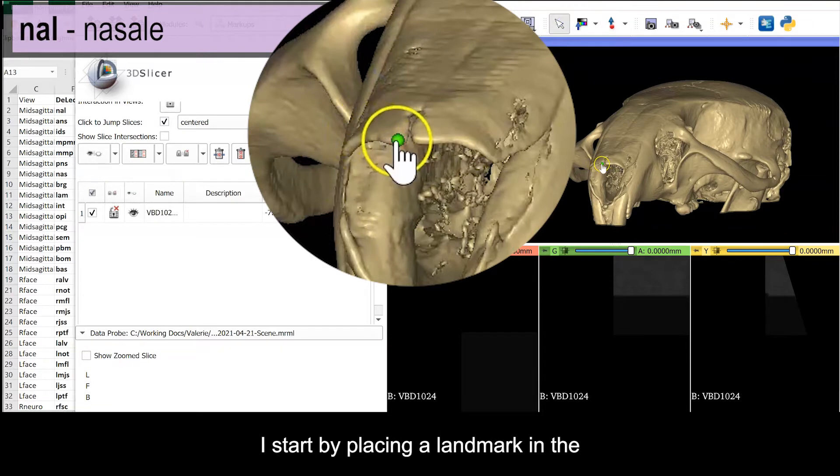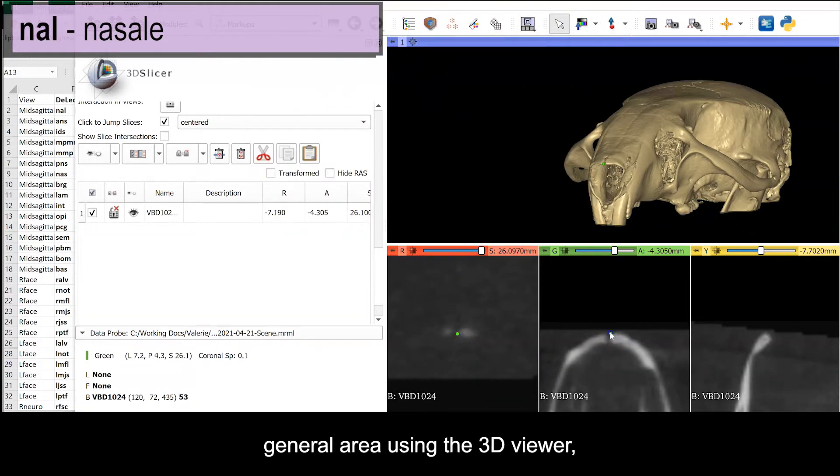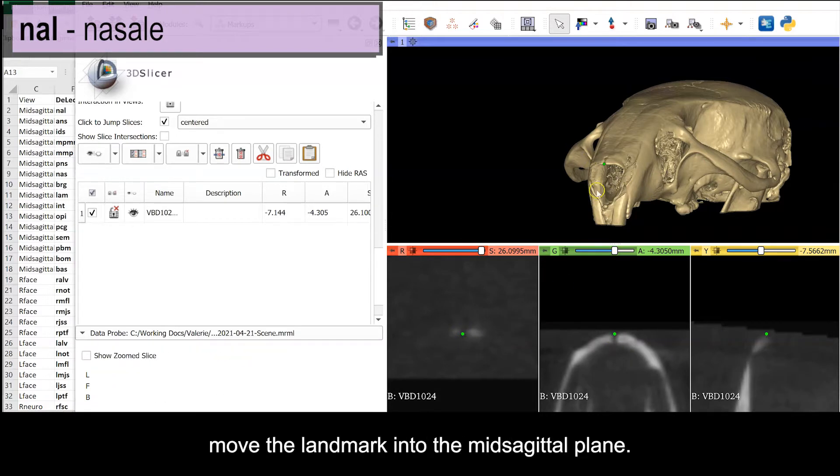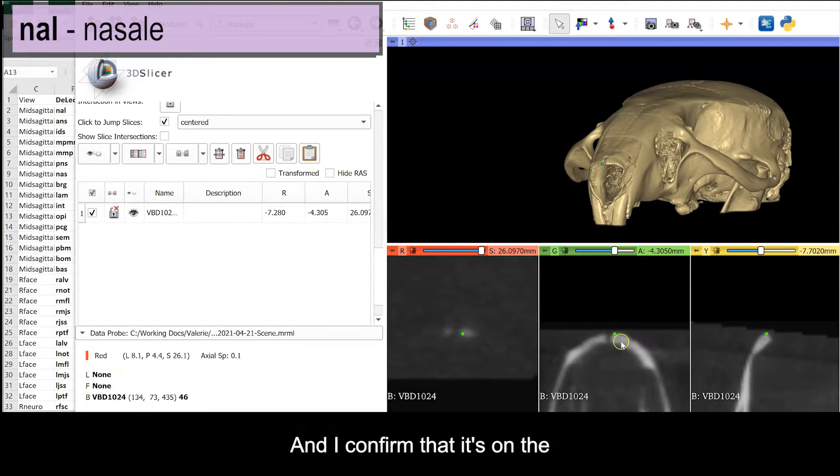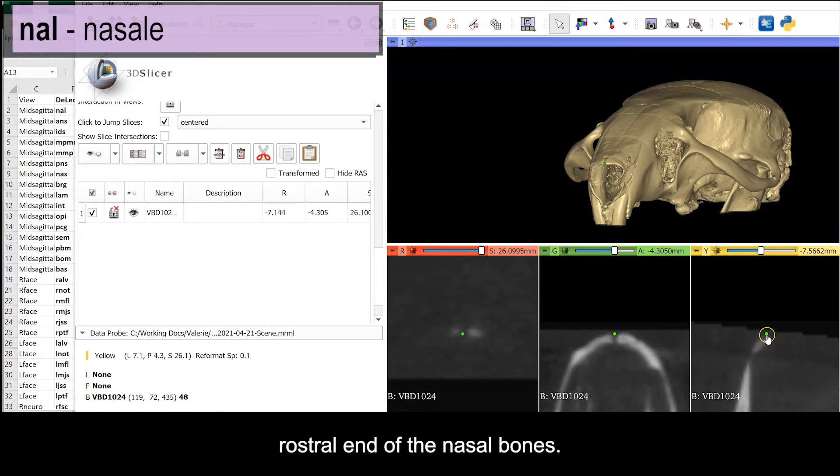For all landmarks, I start by placing a landmark in the general area using the 3D viewer. And then I use the orthogonal views to move the landmark into the mid-sagittal plane. And I confirm that it's on the dorsal surface and at the most rostral end of the nasal bones.